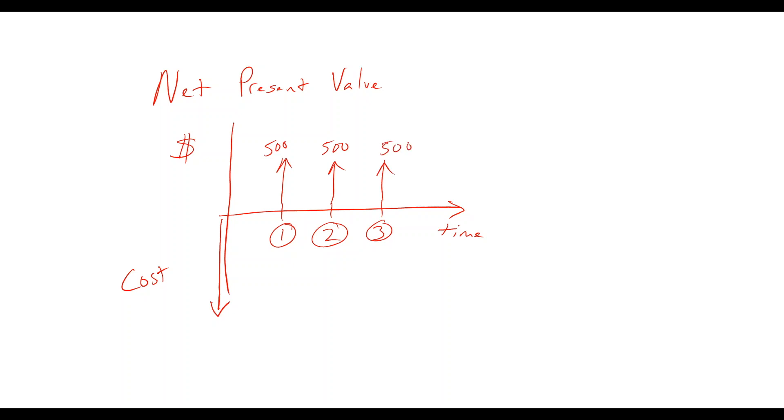But we all know that money in the future is not worth as much as money today. So what we want to do is basically move these $500 back in time and estimate what their value would be today. This estimate we would call the P positive—that would be the present value of the positive cash flows.